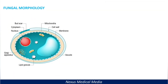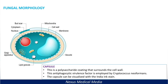Now we'll look at the morphology of fungi. Starting from the outside, some fungi have a capsule — a polysaccharide coat that surrounds the cell wall. A capsule has antiphagocytic properties, meaning it allows the fungi to evade phagocytosis. An example of fungi with a capsule is Cryptococcus neoformans. This capsule can be visualized with a specific staining method called Indian ink.